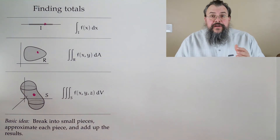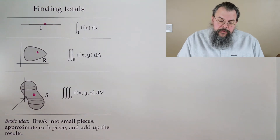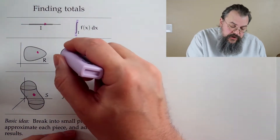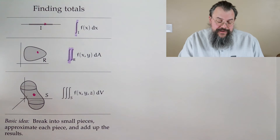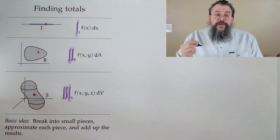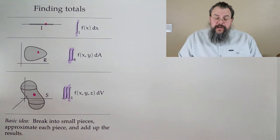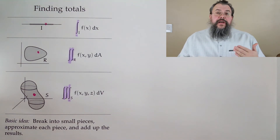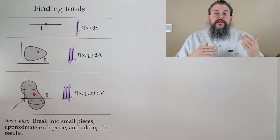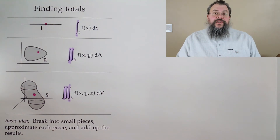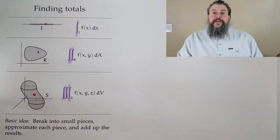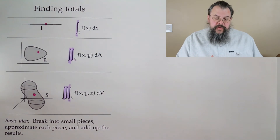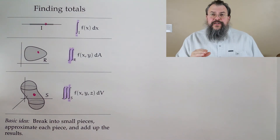One thing we want to point out is notation. When we have a one-dimensional integral, there's one integral sign. A two-dimensional integral has two integral signs. A three-dimensional integral has three integral signs. So the notation tells you what kind of problem you're in. Good notation should be informative and illuminate a problem; bad notation is obfuscating and confuses what's going on.